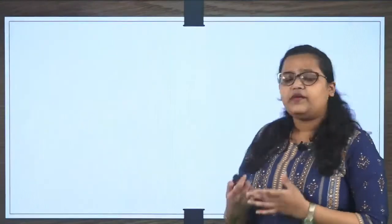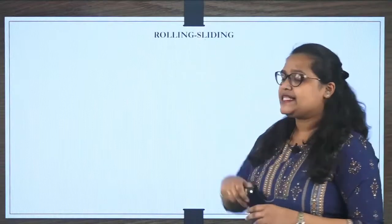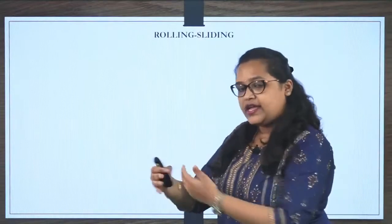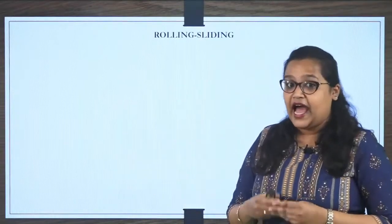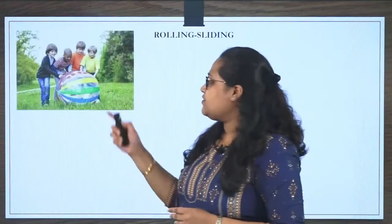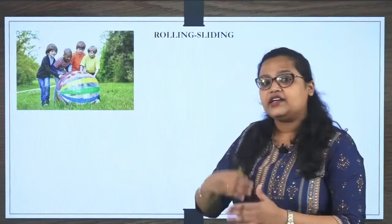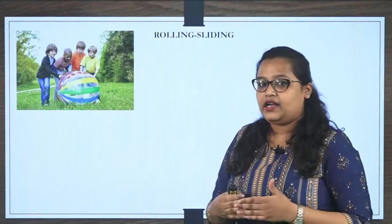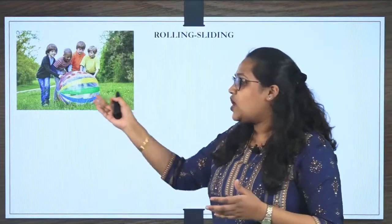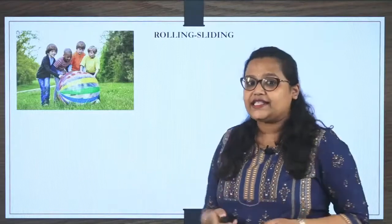Next, what are we going to learn? Next, we'll be learning about rolling and sliding. Rolling and sliding. I hope you understood. But before that, let me give some examples. Rolling means, here you can see the kids are rolling the ball. Because the surface is not a flat shape. It is curved shape. So, it is getting rolled.